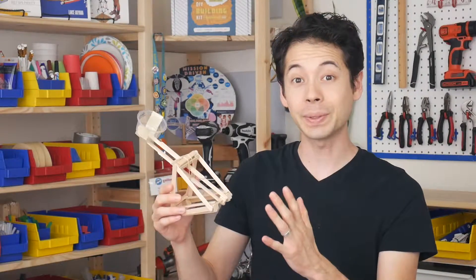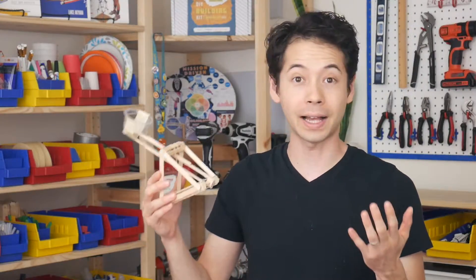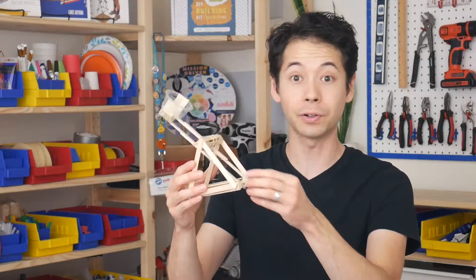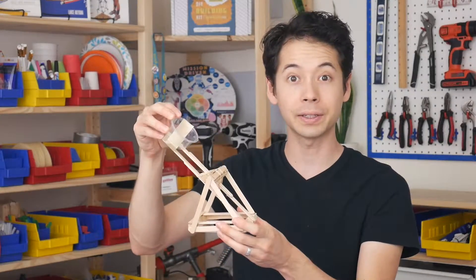Hey, my name is Lance. The Class 3 catapult is a great example of how a Class 3 lever works, where there's a fulcrum on one end, a load on the other, and the effort is somewhere in the middle. So let's get started.